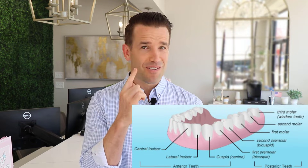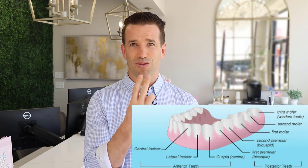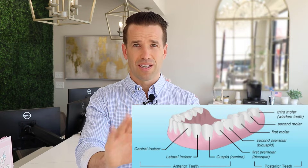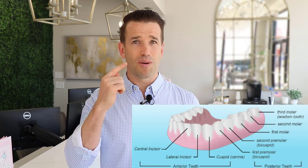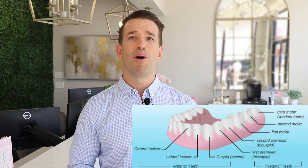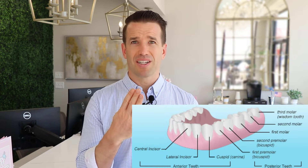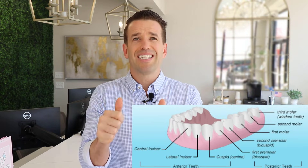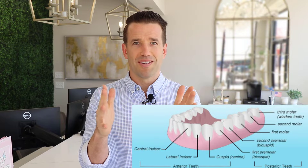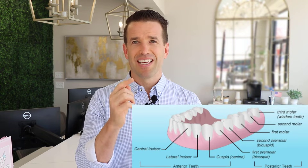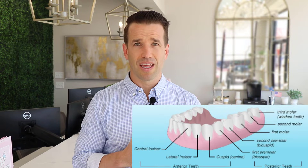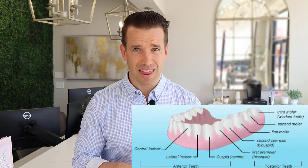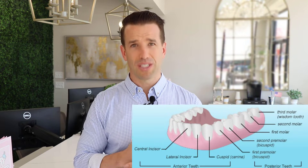If you put all six front teeth together — the centrals, laterals, and canines — those are the anterior teeth, meaning the teeth towards the front. The teeth behind that, starting from the first premolar backwards, are called the posterior teeth. So you have anterior teeth, which are the canines, laterals, and centrals grouped together, and then you have the posterior teeth, which are basically any teeth behind that.